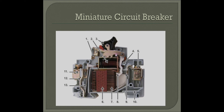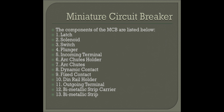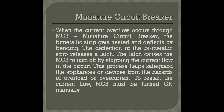The components of the MCB include a solenoid, incoming terminal, dynamic contact, fixed contact, and outgoing terminal. When current overflows through the MCB, the bimetallic strip gets heated and deflects by bending. The deflection of the bimetallic strip releases a latch, which causes the MCB to turn off by stopping the current flow in the circuit. This process helps safeguard the appliances or devices.